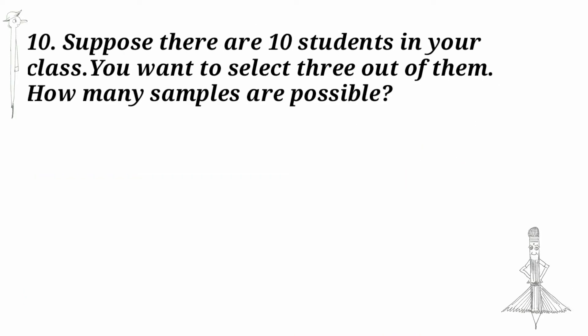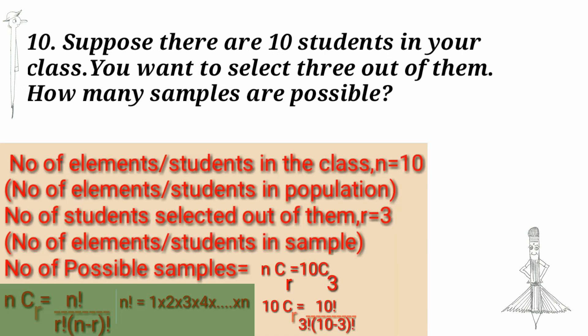Suppose there are 10 students in your class. You want to select 3 out of them. How many samples are possible? Number of students in population, n is equal to 10. Number of students in sample, r is equal to 3. Number of possible samples is equal to nCr, that is 10C3.